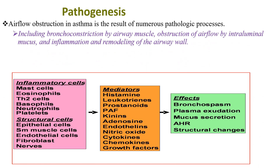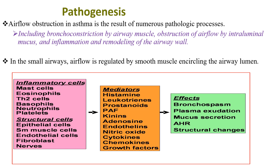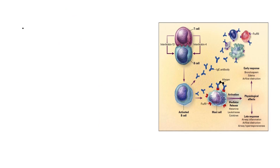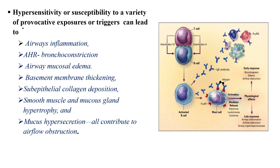When we see the pathogenesis, airflow obstruction in asthma is the result of numerous pathologic processes, including bronchoconstriction by airway muscle, obstruction of airflow by intraluminal mucosa, and inflammation and remodeling of the airway wall. In the small airways, airflow is regulated by smooth muscle encircling the airway lumen. Hypersensitivity or susceptibility to provocative exposures or triggers can lead to airway inflammation, airway constriction, airway mucosal edema, basement membrane thickening, sub-epithelial collagen deposition, and smooth muscle and mucous gland hypertrophy and hypersecretion — all contributing to airflow obstruction in asthma.